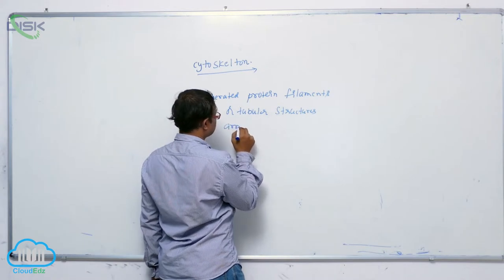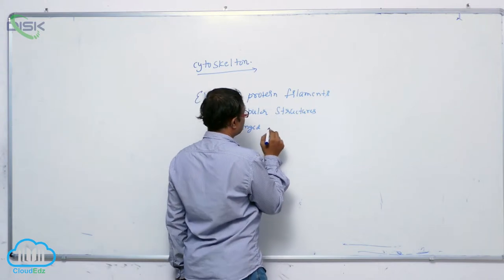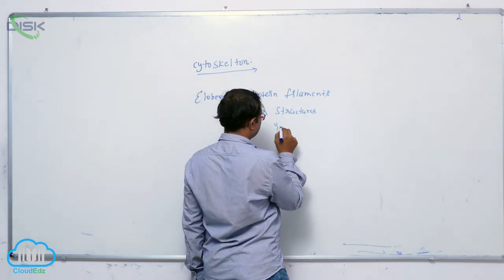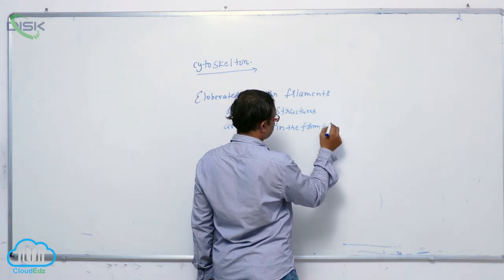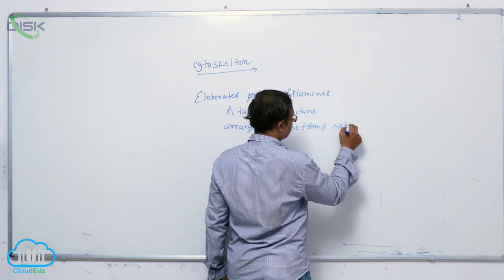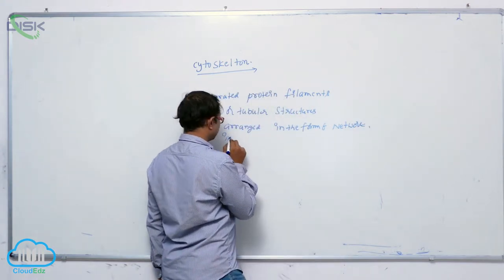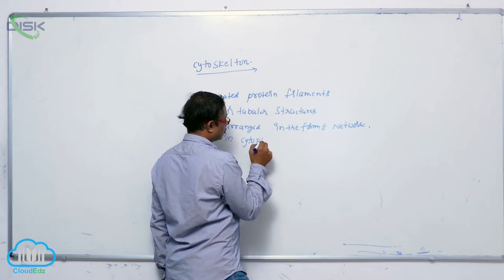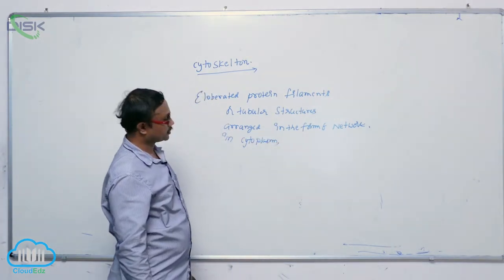Arranged in the form of a network in cytoplasm. That is known as the cytoskeleton.